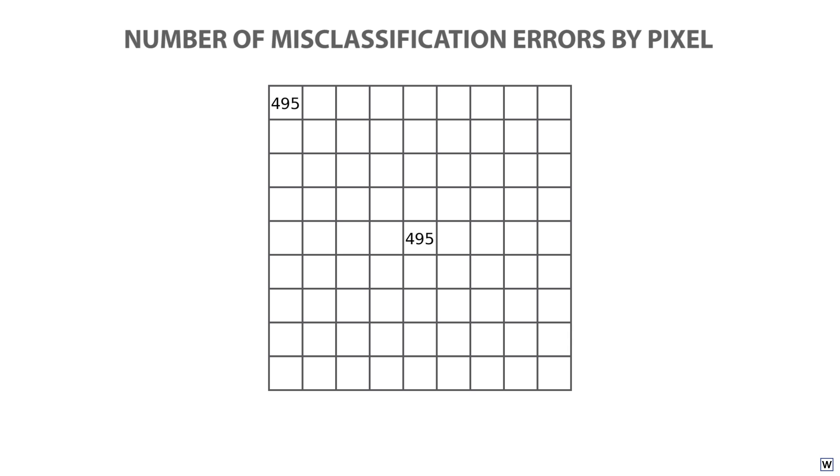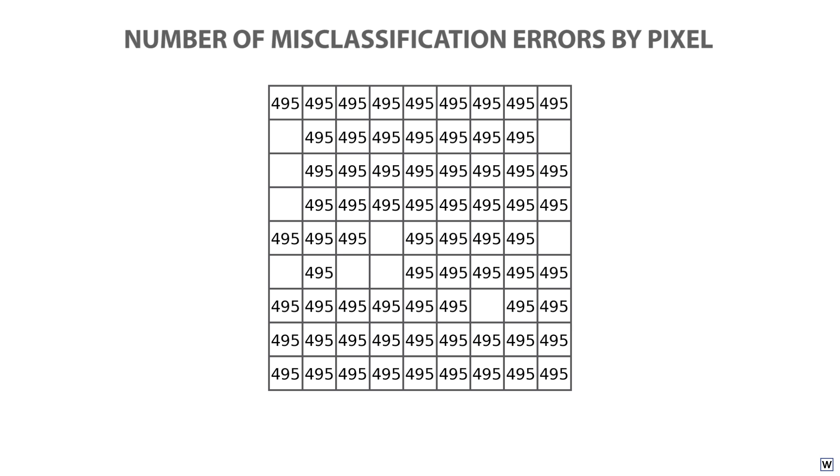In fact, no matter which pixel we split on, we end up with the same unremarkable result. 495 errors. Exactly the same number we started with.